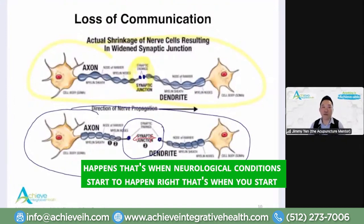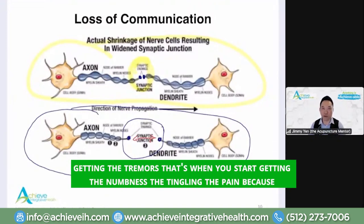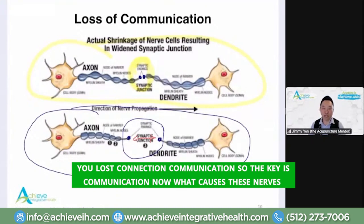When there's improper communication, I like to say there's a short circuit. And when that happens, that's when neurological conditions start to happen — that's when you start getting the tremors, the numbness, the tingling, the pain — because you lost connection and communication.